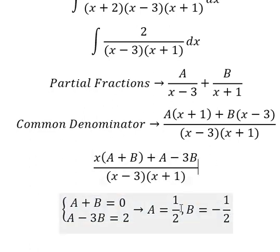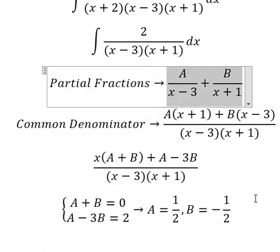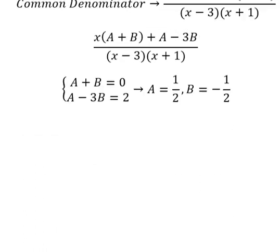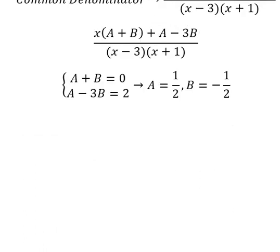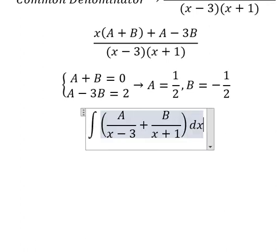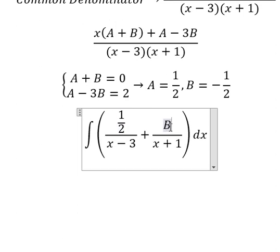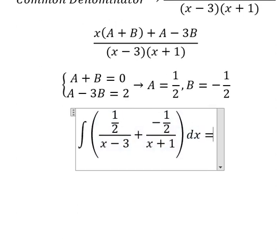And now we put A and B going here. So A equals to 1 over 2. B equals to negative 1 over 2. And now we have the final answer.